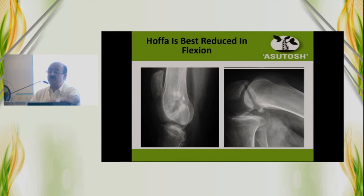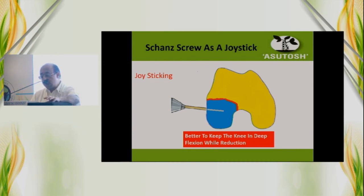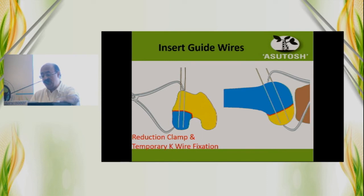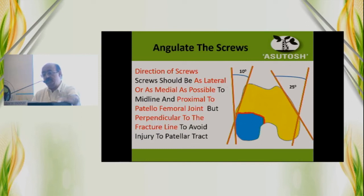Hoffa fracture is best reduced in flexion because the forces on the capsule, gastrocnemius, and surrounding structures relax. When reducing, visualize the fracture site from whichever approach you are taking. A joystick may be used, and keeping the knee in deep flexion aids easy reduction. Insert guide wires, hold the fracture with a clamp temporarily, then fix your screws. Screws should go proximal to the patellofemoral joint if possible, as lateral or medial as possible, and perpendicular to the fracture site.